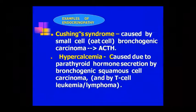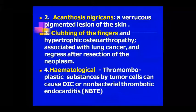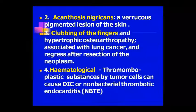Another example is hypercalcemia, which involves PTH-related hormone secretion. For example, bronchogenic squamous cell carcinoma and lymphoma show PTH-related secretion. You can also see acanthosis nigricans — a skin pigmented lesion. The fingers develop clubbing, known as hypertrophic osteoarthropathy, and lung cancer is also linked to this condition.